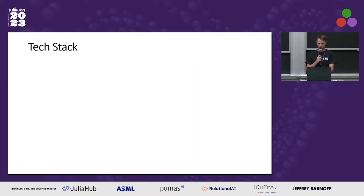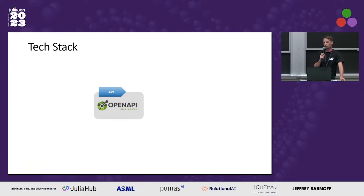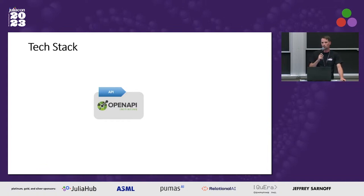How does all of this work? The backbone of the application is the RESTful API description that follows the OpenAPI specification. Basically, that specification tells what HTTP requests the API should answer, as well as the format of the response and the format of the request payload. It also provides a language-agnostic way of defining data structure, so it's easy to communicate between the front-end and the back-end.